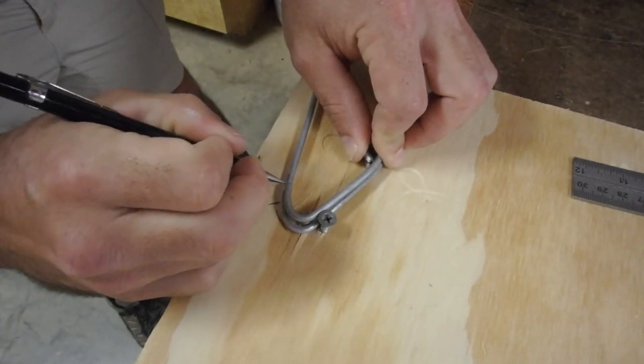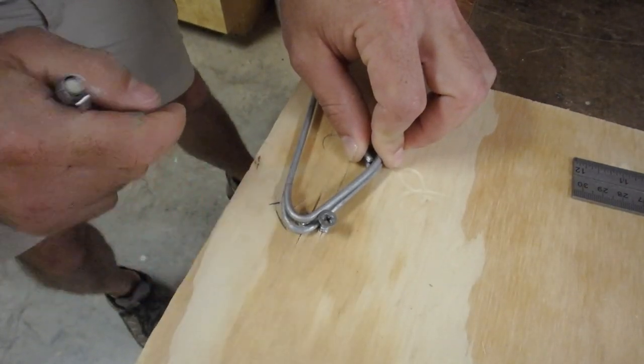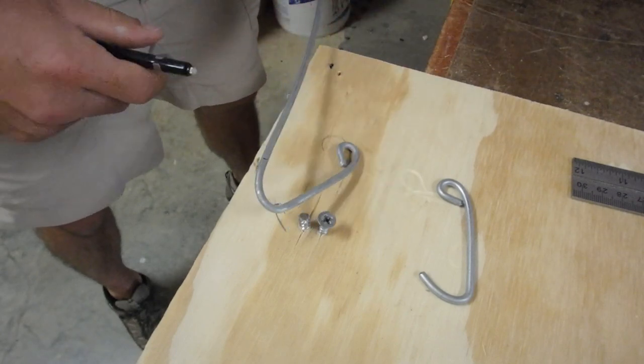Bend the hook, mark the end, and now I know where to cut it off and all my hooks will be about the same size.